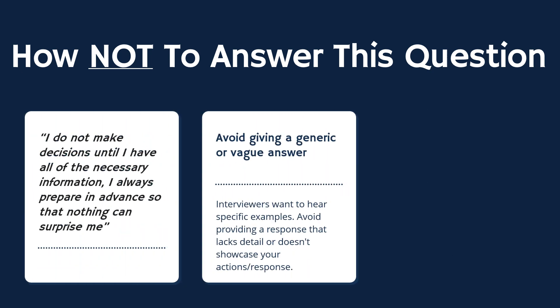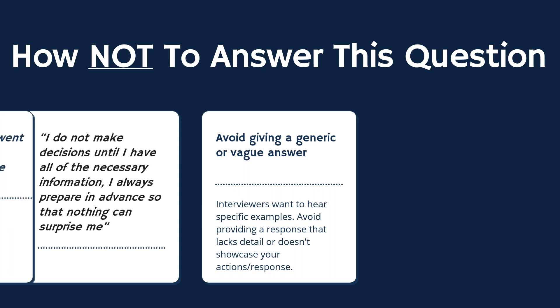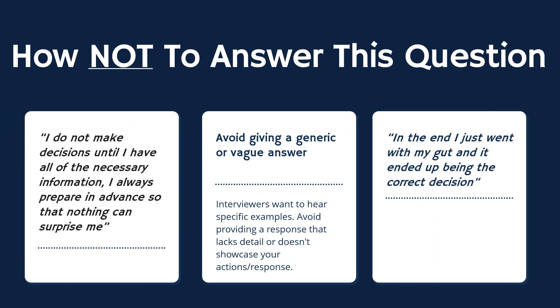Number two: avoid giving a generic or vague answer. The question includes the phrase 'tell me about a time' for a reason — interviewers want to hear specific examples, so avoid responses that lack detail or don't showcase your actual actions. And finally, the third thing you should not say is something along the lines of, 'in the end I just went with my gut and it ended up being the correct decision.' If you say this, the interviewer will think you just got lucky, not that you have some heightened instinct for decision making.